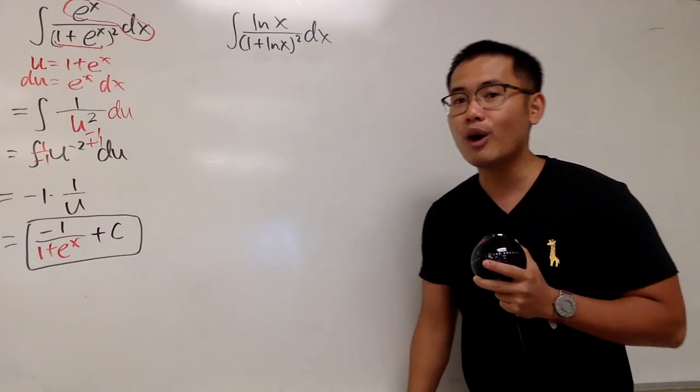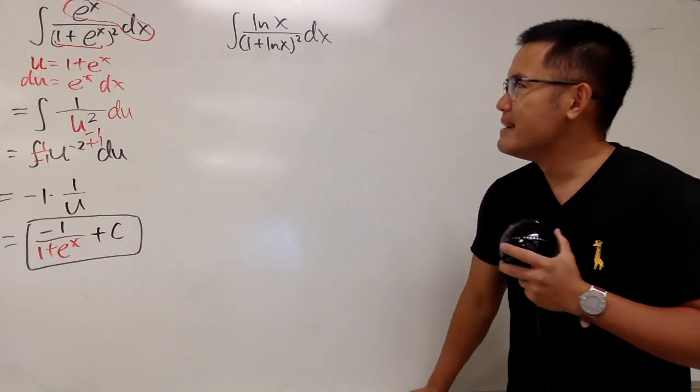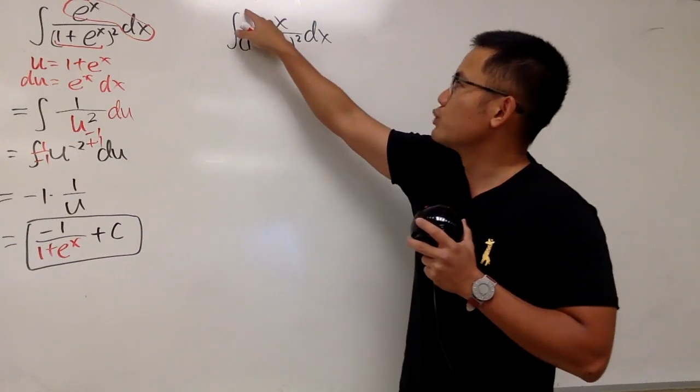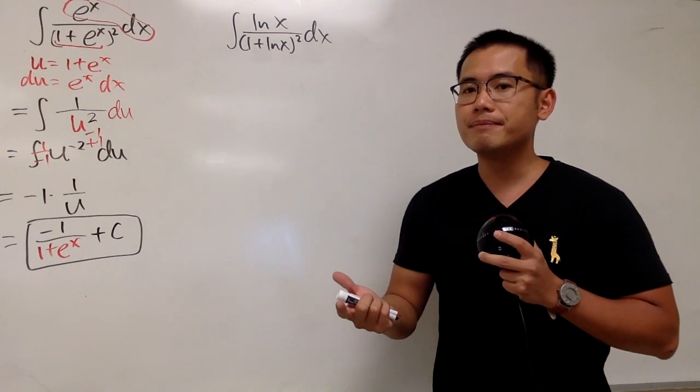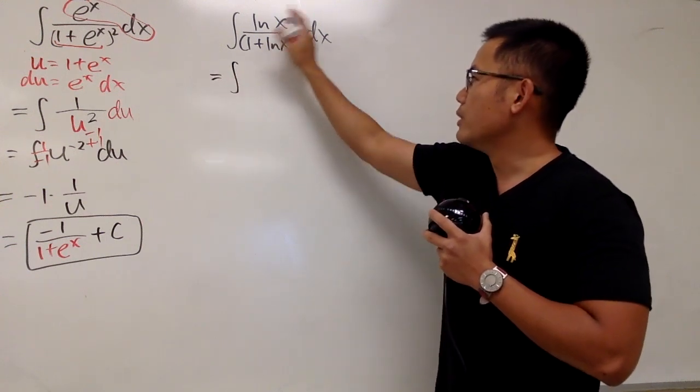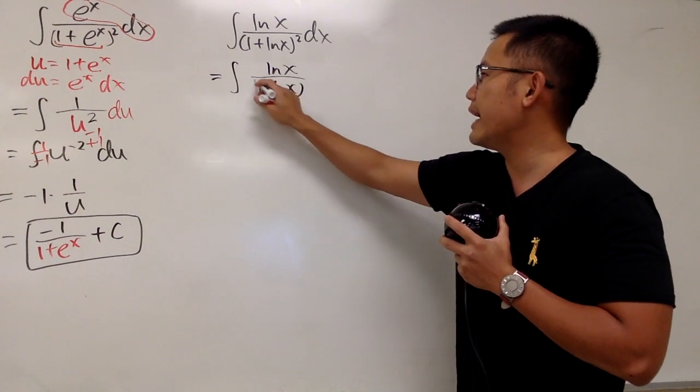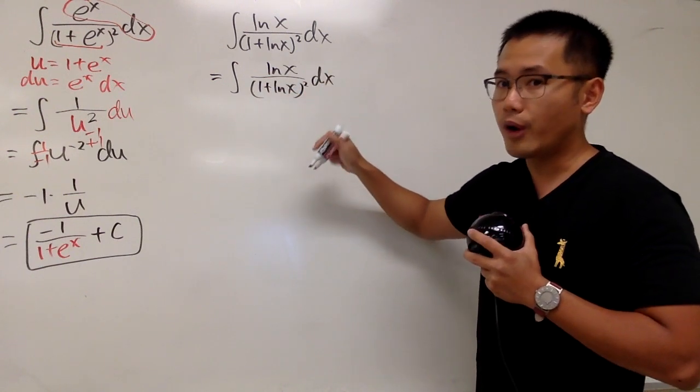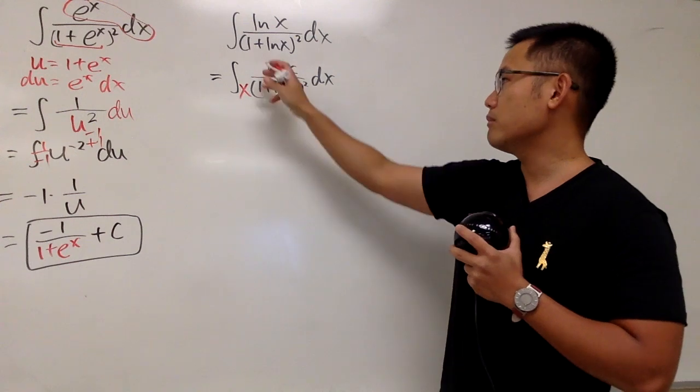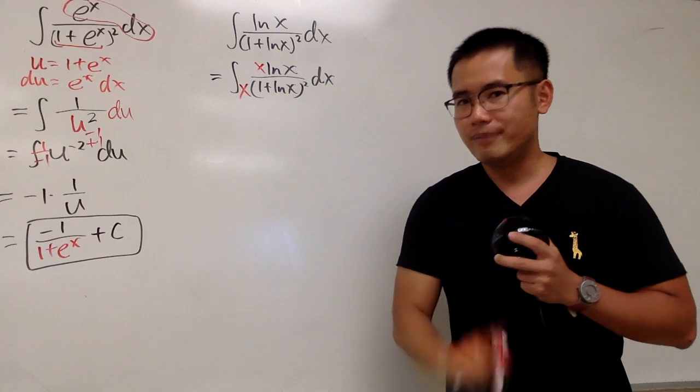You guys can leave a comment down below and let me know your approach to this one right here, right now. Go ahead. This is how I will make it happen because, as we talk about it, if the top is 1 over x, we know how to integrate that. Well, let's just make that happen. So, let's take a look of this integral right here. Let me just copy down the same thing, natural log of x over 1 plus natural log of x and square right here dx. Well, I want to have a 1 over x on the top. That means the x on the bottom. In the meantime, I multiply the x on the bottom, I can just multiply the x on the top.